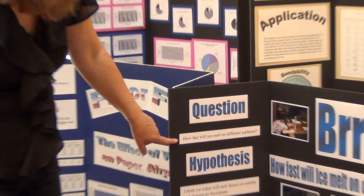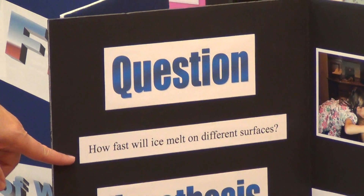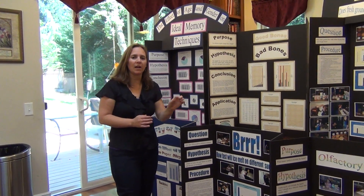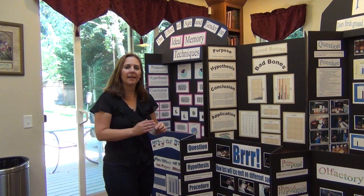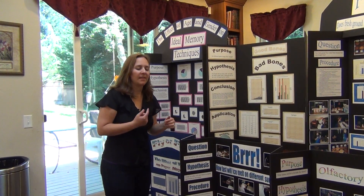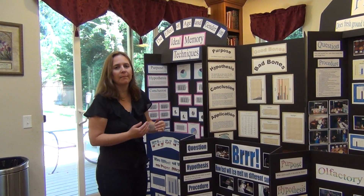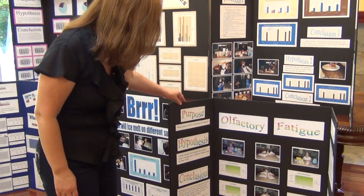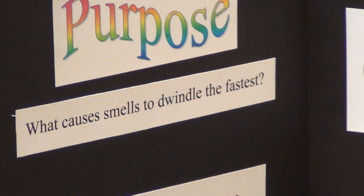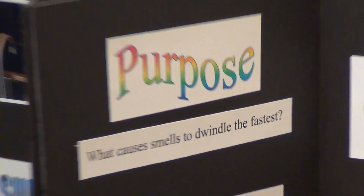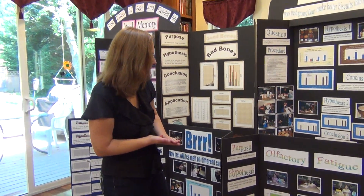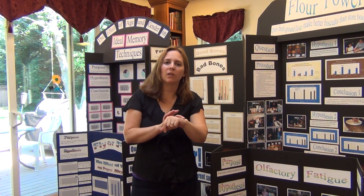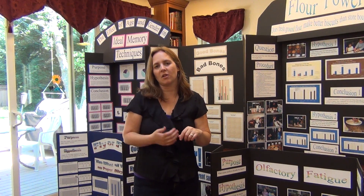On this one, the question was: how fast will ice melt on different surfaces? She was able to measure it by taking an exact amount of time for each ice cube on the different surfaces, weighing them before and after the time, and finding the difference to know how much they melted. And this last example is: what causes smells to dwindle the fastest? That was also a hard question to measure, but she measured it by timing how long she could smell an item before the smell went away — and that's called olfactory fatigue.